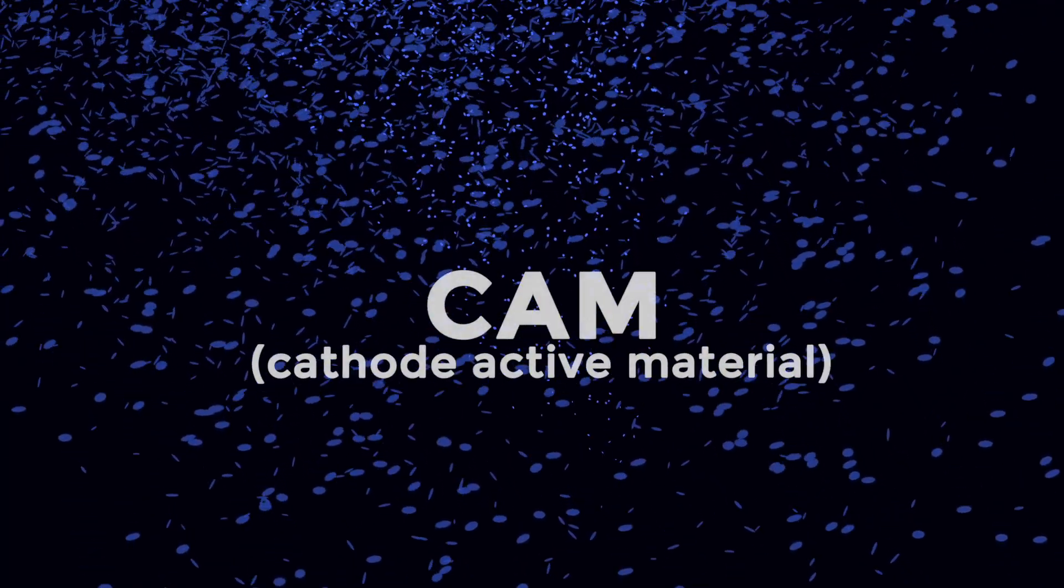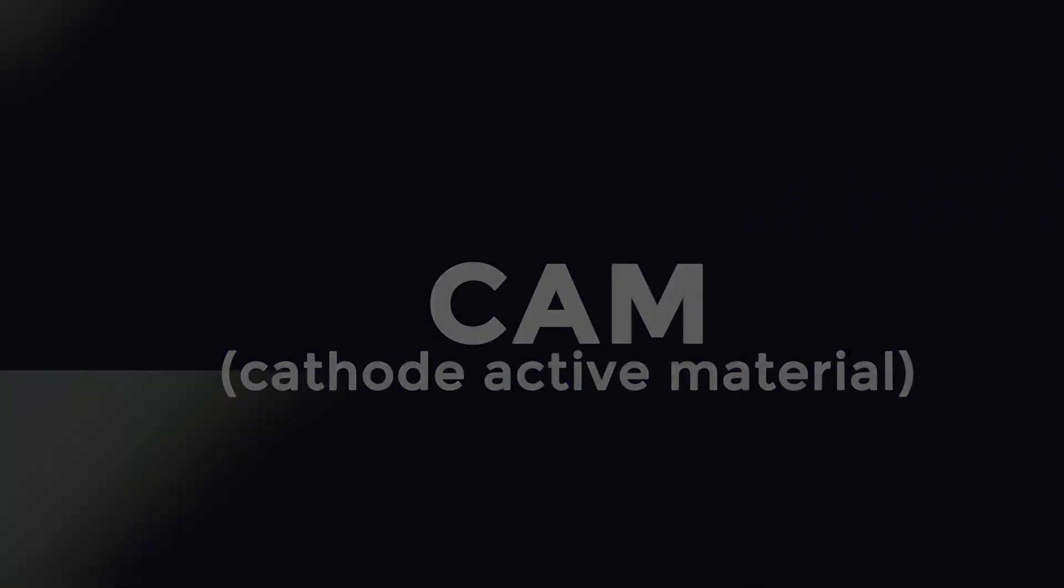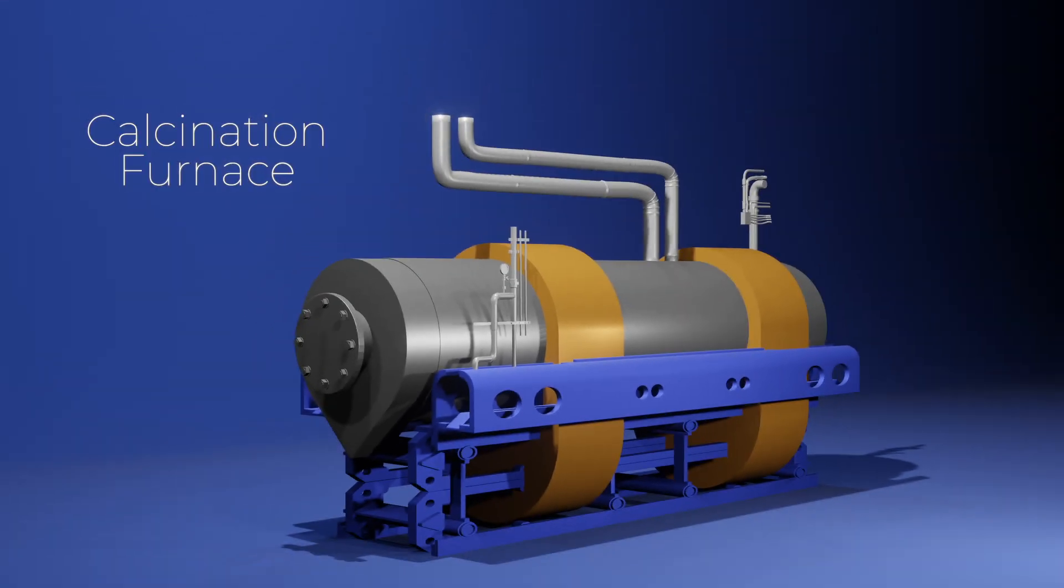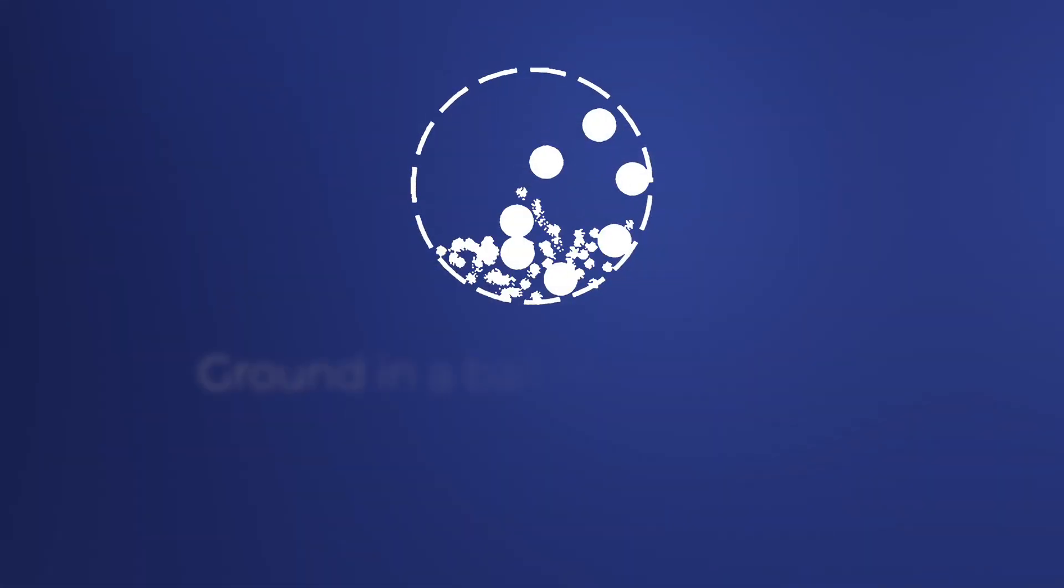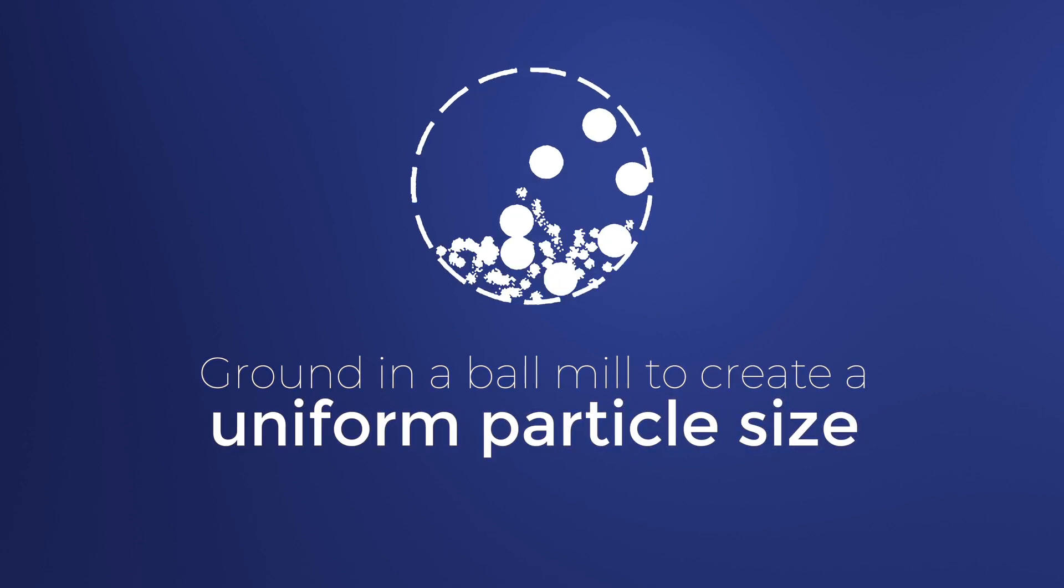Then the metal hydroxide is mixed with lithium hydroxide or carbonate to create a cathode active material for our lithium batteries. Calcination in a high temperature furnace activates the metal lithium hydroxide mixture, which is ground in a ball mill to create a uniform particle size.